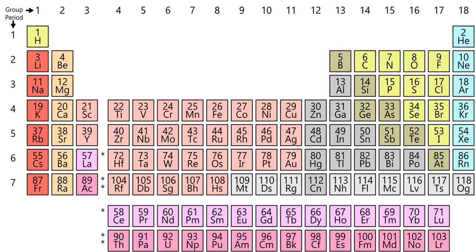All the elements from atomic numbers 1 through 118 have been either discovered or synthesized, completing the first seven rows of the periodic table. The first 98 elements exist in nature, although some are found only in trace amounts and others were synthesized in laboratories before being found in nature. Elements 99 to 118 have only been synthesized in laboratories or nuclear reactors. The synthesis of elements having higher atomic numbers is currently being pursued; these elements would begin an eighth row, and theoretical work has been done to suggest possible candidates for this extension.